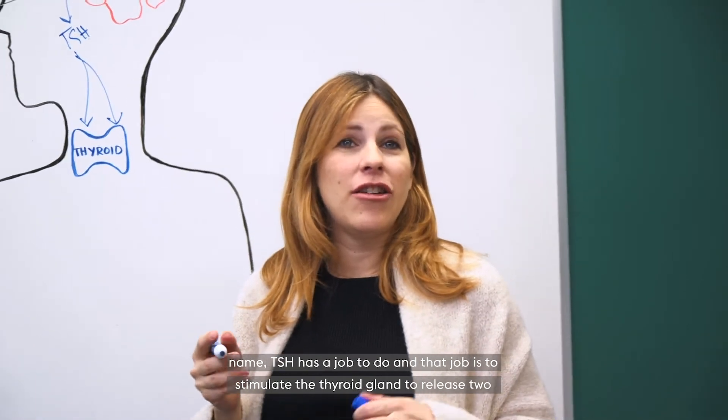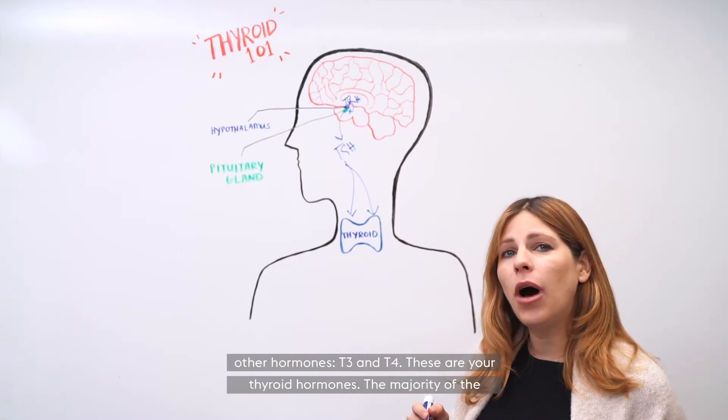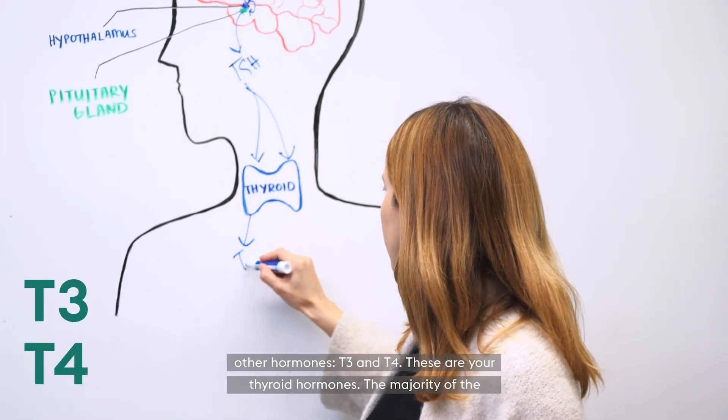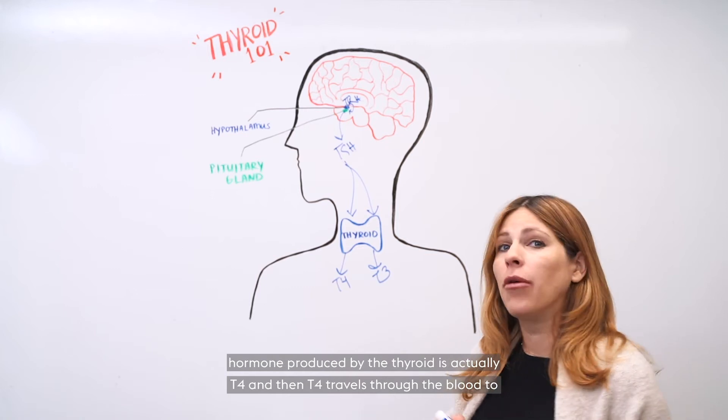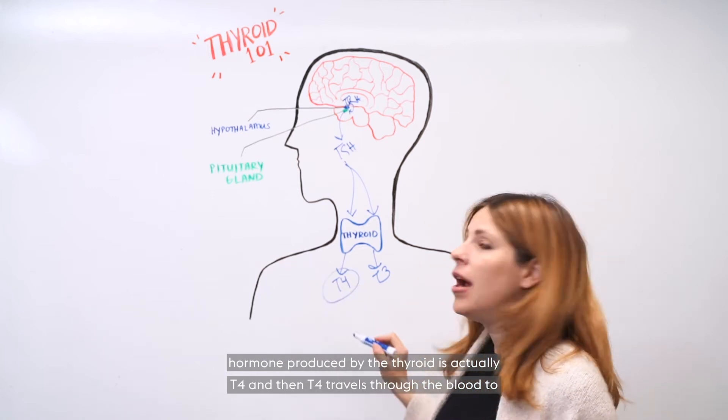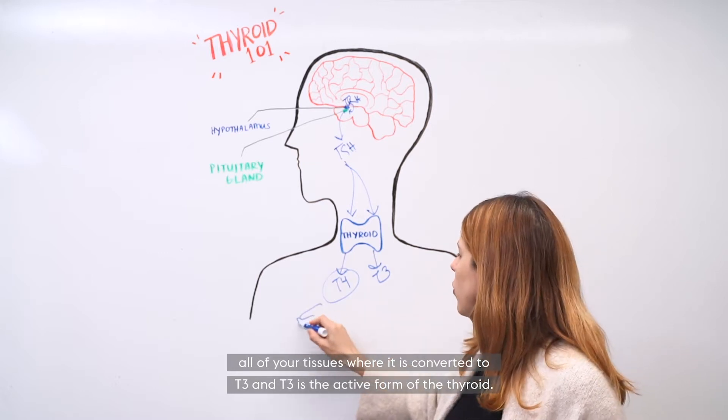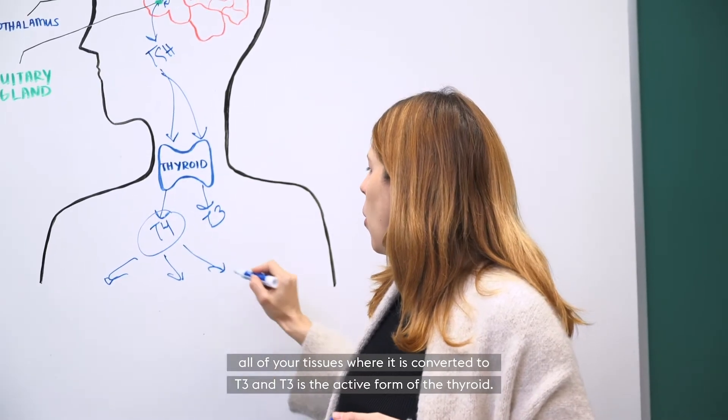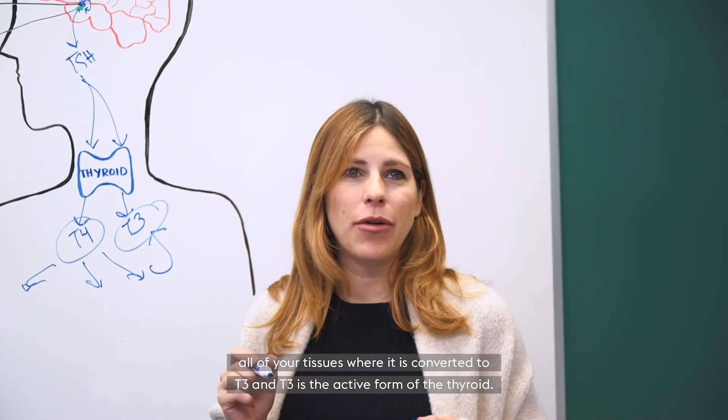True to its name, TSH has a job to do and that job is to stimulate the thyroid gland to release two other hormones, T3 and T4. These are your thyroid hormones. The majority of the hormone produced by the thyroid is actually T4. And then T4 travels through the blood to all of your tissues where it is converted to T3. And T3 is the active form of the thyroid.